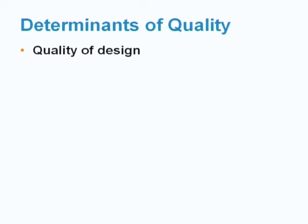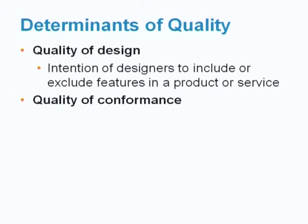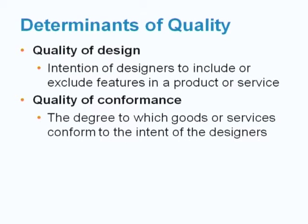The next topic is the determinants of quality. Quality can be divided into quality of design and quality of conformance. Quality of design refers to the intention of the designer to include or exclude functions or features in the product or service. Quality of conformance refers to how well the product or service conforms to the design specification.